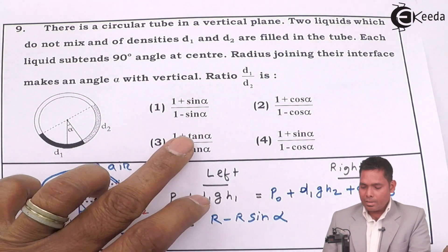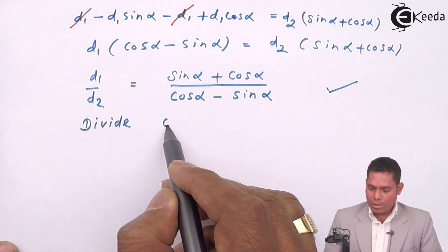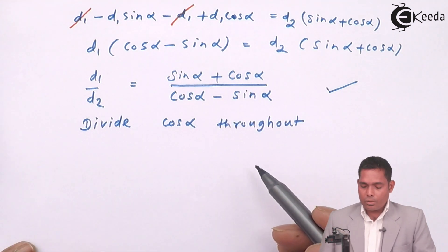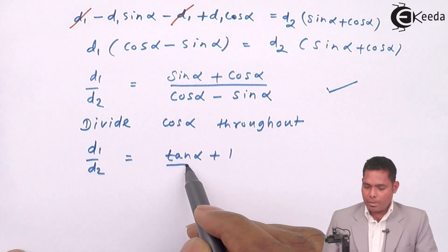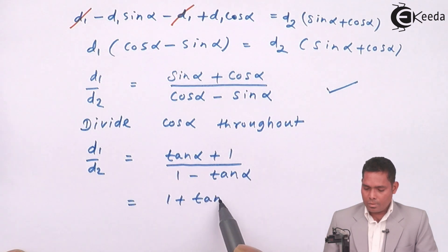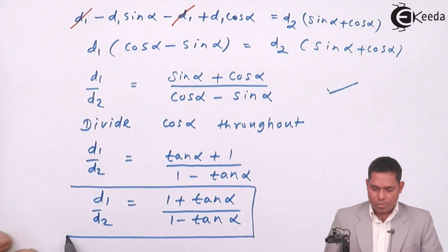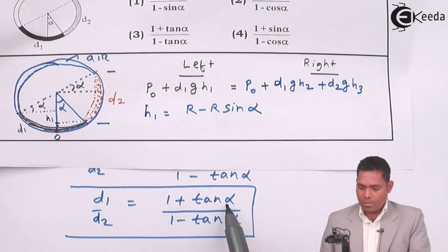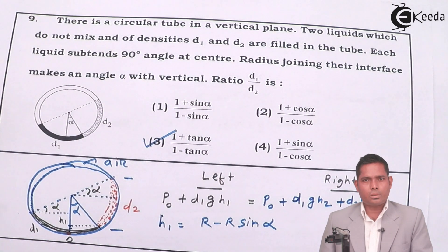So d1/d2 = (1 + tan α) / (1 − tan α). Looking at the options, this matches option number 3: (1 + tan α) / (1 − tan α). So option number 3 is the correct answer to this question. Thank you.